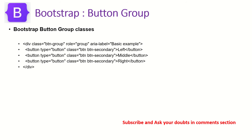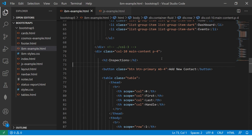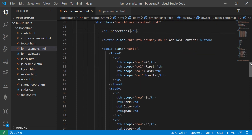Bootstrap provides a class called `btn-group`. Using that, we can group multiple buttons together. You can see an example where we are grouping three buttons. Let's see this in action and how we can use it to improve the user experience as a whole.